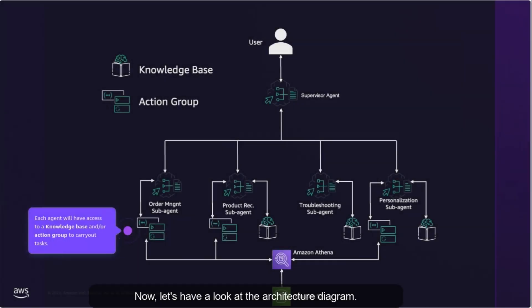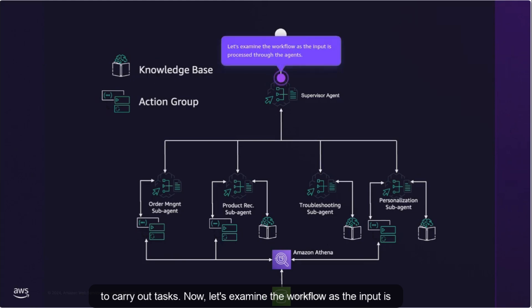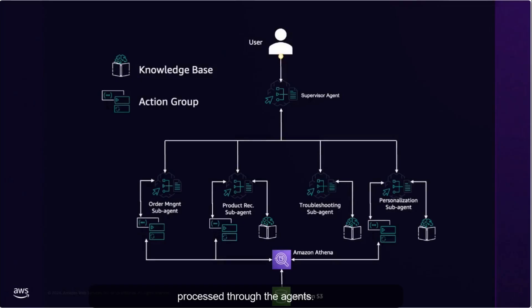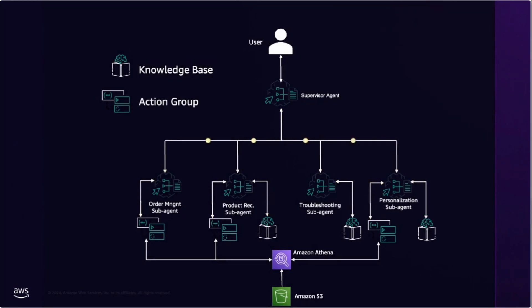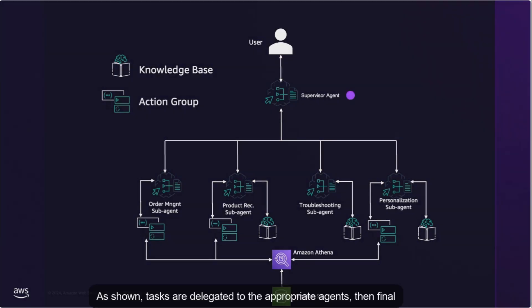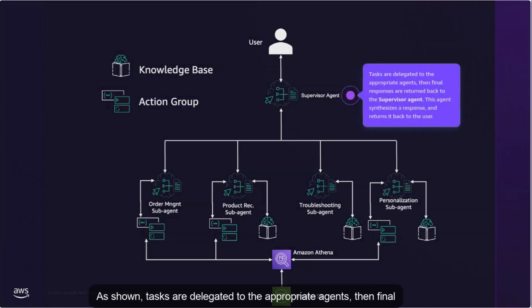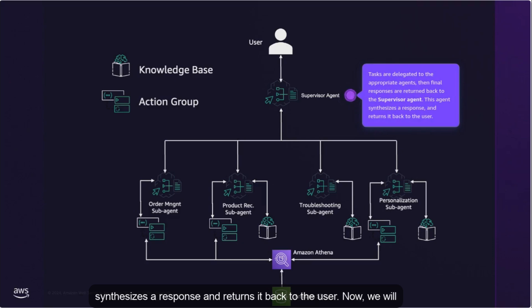Now let's have a look at the architecture diagram. Each agent will have access to a knowledge base and action group to carry out tasks. Now let's examine the workflow as the input is processed through the agents. As shown, tasks are delegated to the appropriate agents, then final responses are returned back to the supervisor agent. This agent synthesizes a response and returns it back to the user.